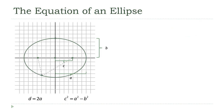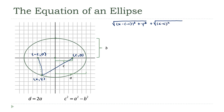Now we're ready to come up with our equation. With the ellipse centered at the origin, I place a random point X comma Y on the ellipse. The focal points are at C comma 0 and negative C comma 0. The sum of the distances from X comma Y to each focal point must equal D. So the square root of X plus C squared plus Y squared, plus the square root of X minus C squared plus Y squared, equals 2A.